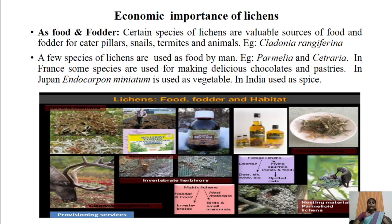Lichens are used as fodder for animals, caterpillars, snails, and termites. A few species of lichens are also used as food by human beings — for example, Parmelia and Cetraria. In France some species are used for making delicious chocolates and pastries. In Japan, Endocarpon miniatum is used as a vegetable. In India, lichens are called 'rock flower' or 'stone flower' and used as spices in preparation of some spicy foods.